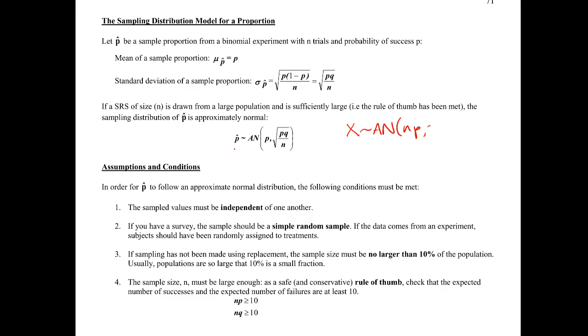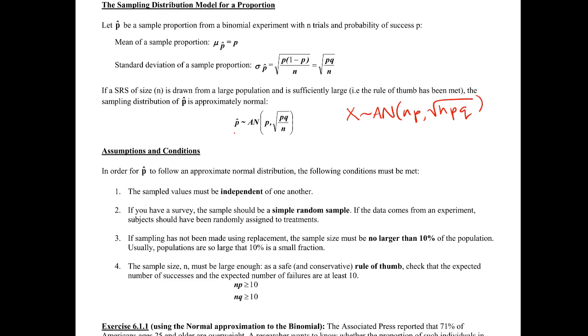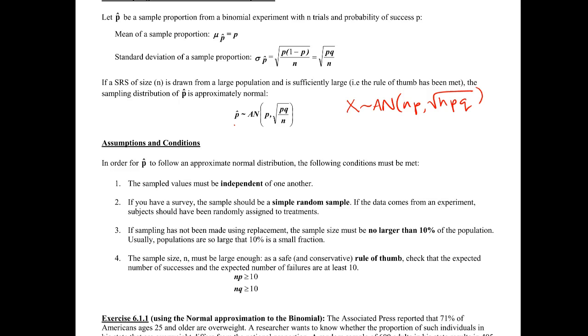Now in order for this to actually be true, for us to have this normal distribution, there are some things that we need to check out before we can say yes, let's draw a normal curve and do stuff. So we have four conditions that we must satisfy. Most of them kind of come from our binomials, because in order for this to be true we need to have a binomial experiment underneath.